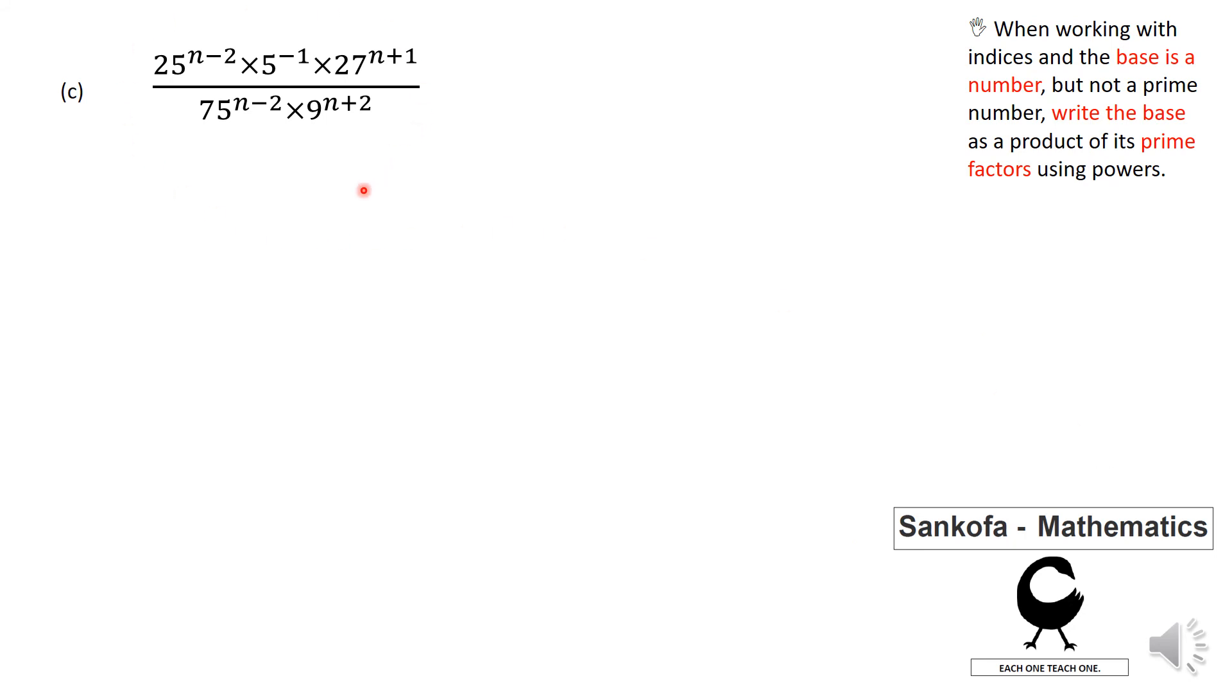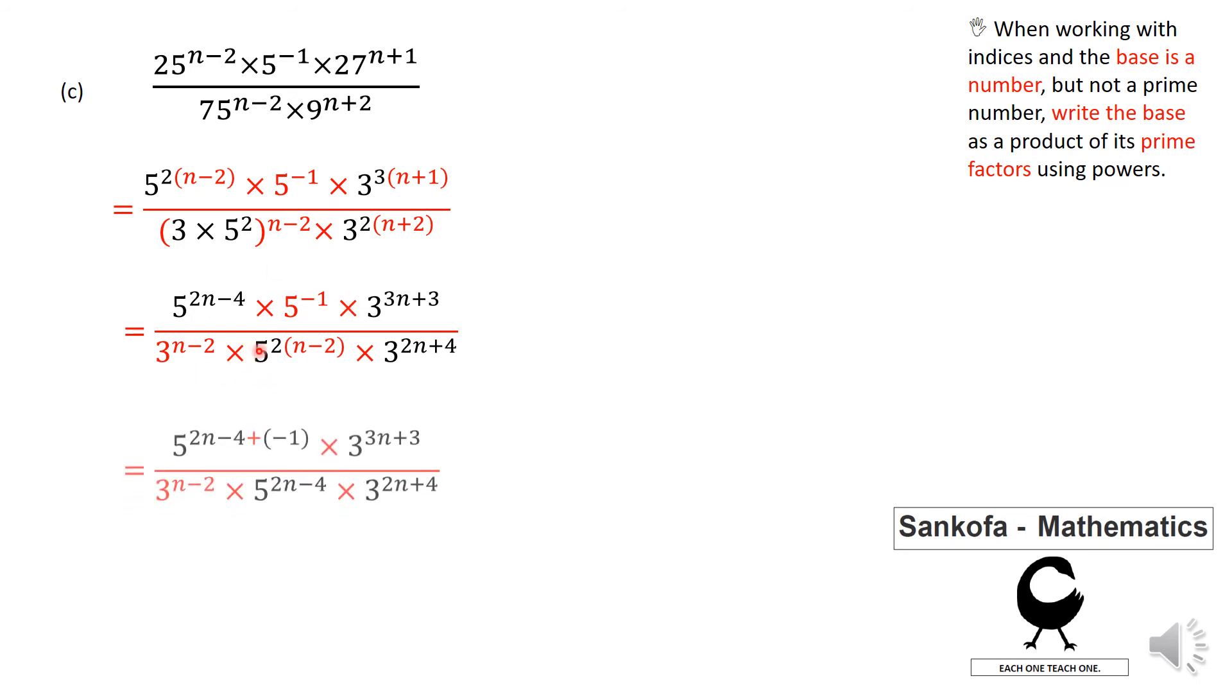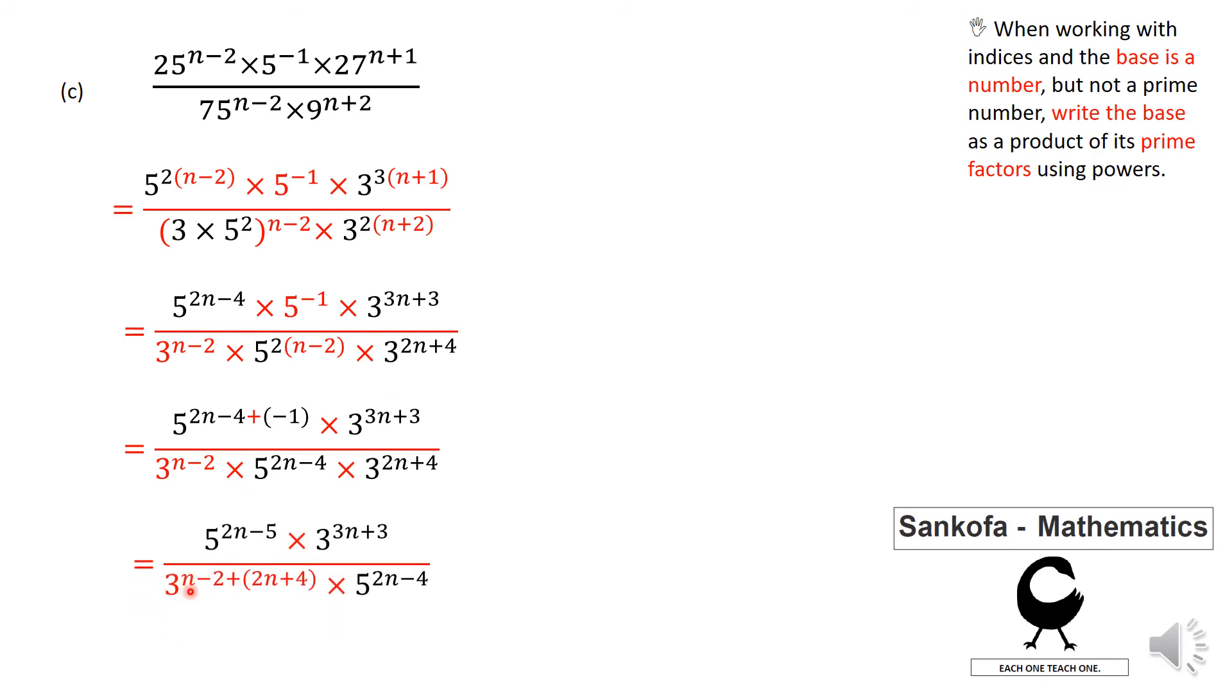So we have another one here. 25 to the n minus 2 times 5 to the negative 1 power times 27 to the n plus 1 power over 75 to the n minus 2 power times 9 to the n plus 2 power. Again, I write those bases as prime factors. And then I distribute, so I make sure I have my 5's together, and so on.